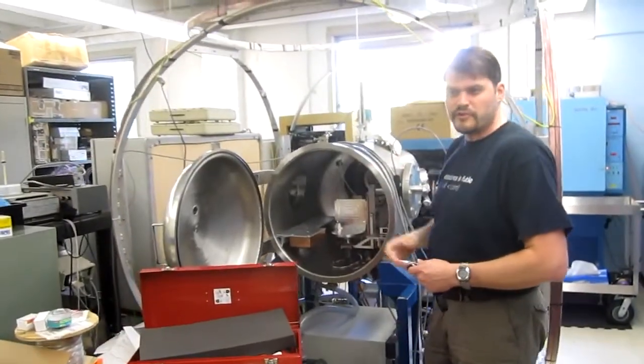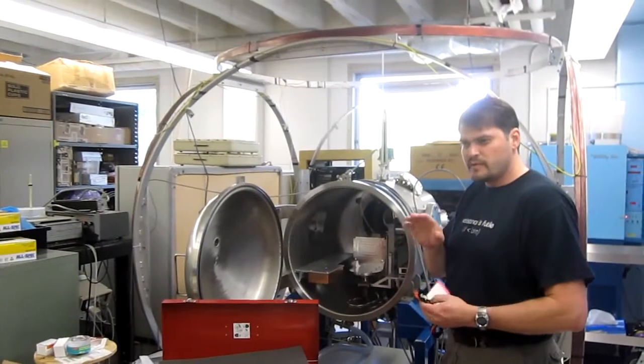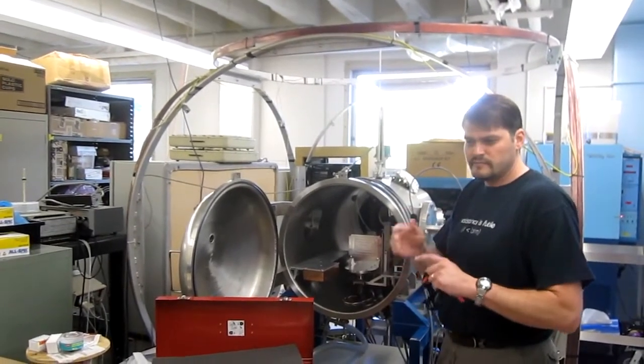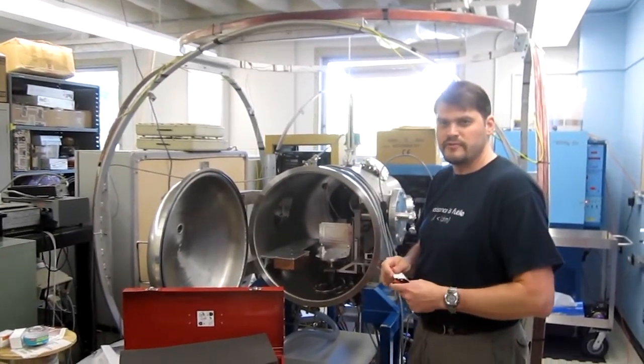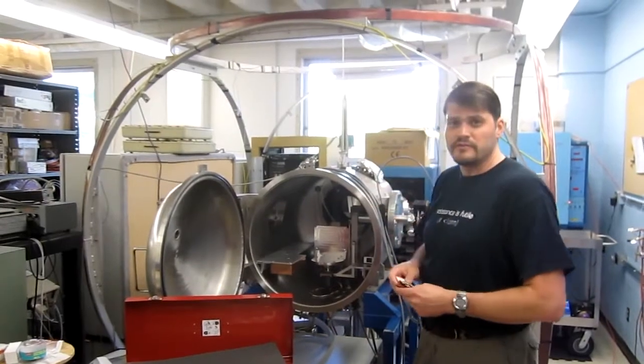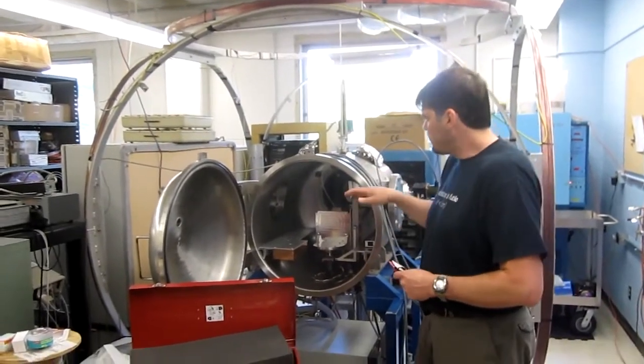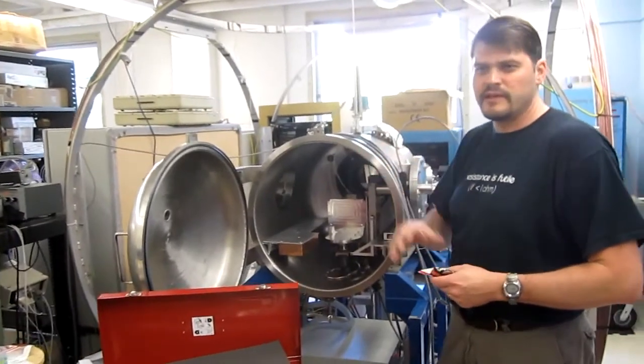These coils here actually negate out the magnetic field because charged particles like to gyrate around magnetic fields. When we get to low energies, because of the strong fields here on the ground on Earth, when we calibrate the sensor, anything above, say, 500 eV in energy we'd be able to calibrate just fine.